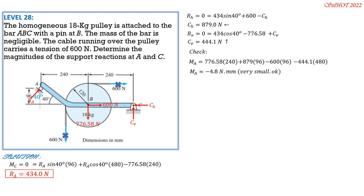Checking is not strictly required, but doing it routinely guarantees your answers. Expressed in newton-meters, the residual is essentially zero, confirming our solution. The magnitude of reaction at C is RC = √(879² + 444.1²) = 984.8 N.